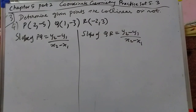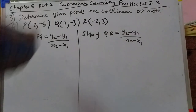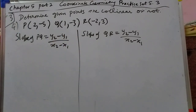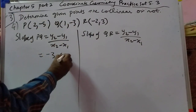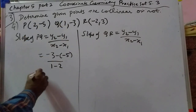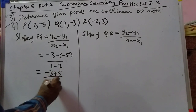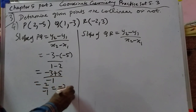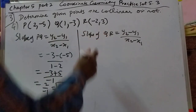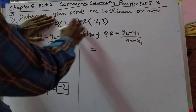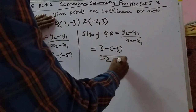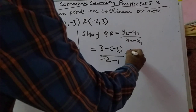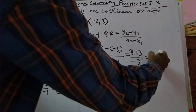Next we do the fourth problem. For slope of PQ: minus 3 minus of minus 5, over 1 minus 2. That will become minus 3 plus 5 upon minus 1, equal to 2 upon minus 1, that is minus 2. Now calculate for QR: 3 minus of minus 2, over minus 2 minus minus 1. That gives 3 plus 3 upon minus 3, which is 6 upon minus 3. That is minus 2. Both are coming equal.